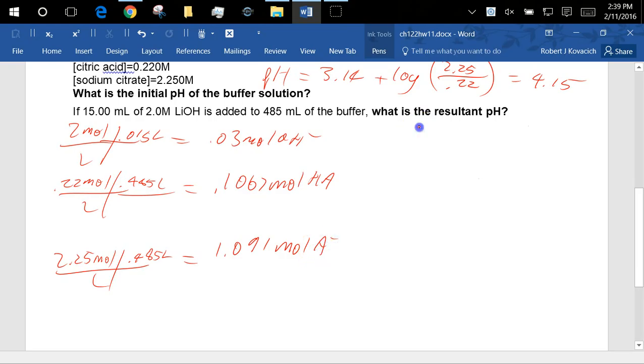So I'll put my ICE table up here, HA, A negative, 0.1067, 1.091. So I put lithium hydroxide in, and my buffer is consisting of my anion and my acid. What is the hydroxide going to react with, the anion or the acid? So I put a base in, so the acid's going to react with it. So that means I'm going to lose some of the acid that I had and gain exactly that same amount of salt.